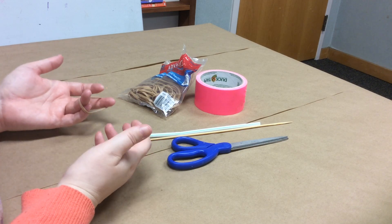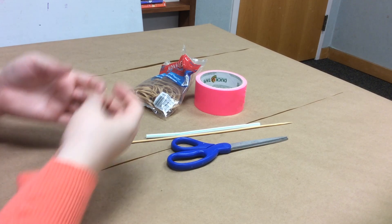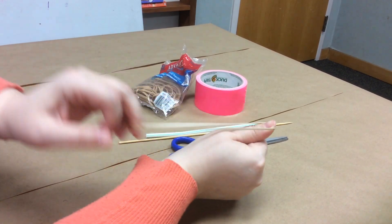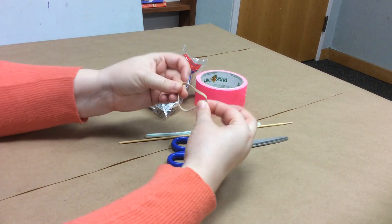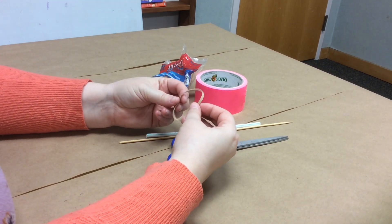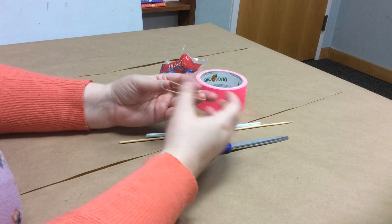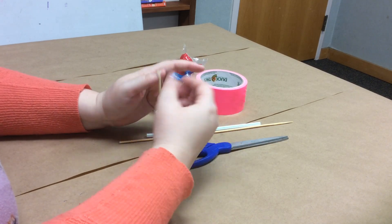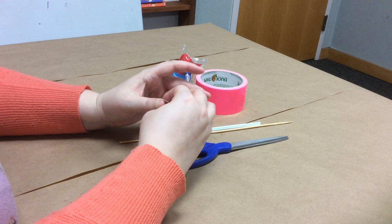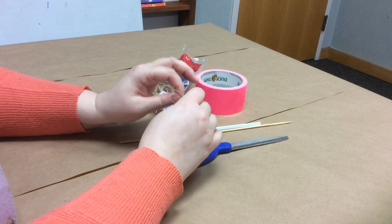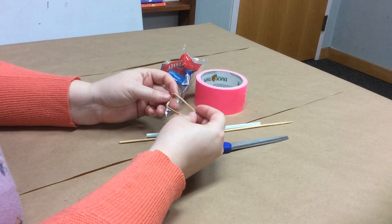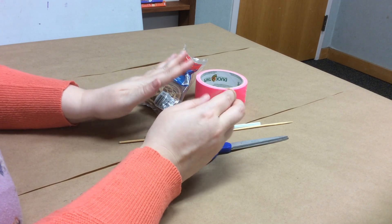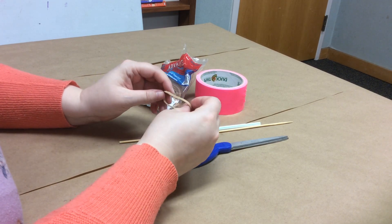So today we're talking about kinetic and potential energy. We're also using elastic energy since we are using rubber bands which stretch and that is an elastic movement but there's all different kinds. There's electric, magnetic, gravitational, chemical, thermal. There's a lot of different types. I have by no means named them all. But today, like I said, we're talking about kinetic, potential, and elastic energy.